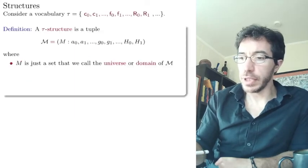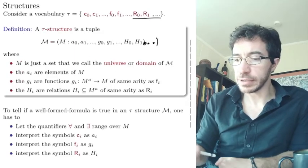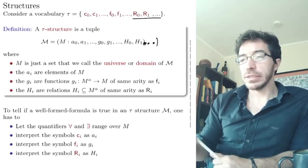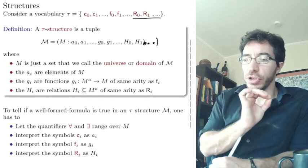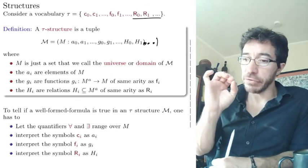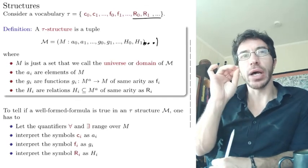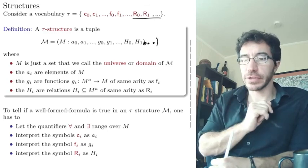But then we're going to have different vocabularies and that's going to give rise to different kinds of structures. So with this formalism, we now know how to interpret the symbols in a vocabulary. Now we need to go a bit more formal on how to define exactly what it means to be true for a sentence or not. See you in the next video.